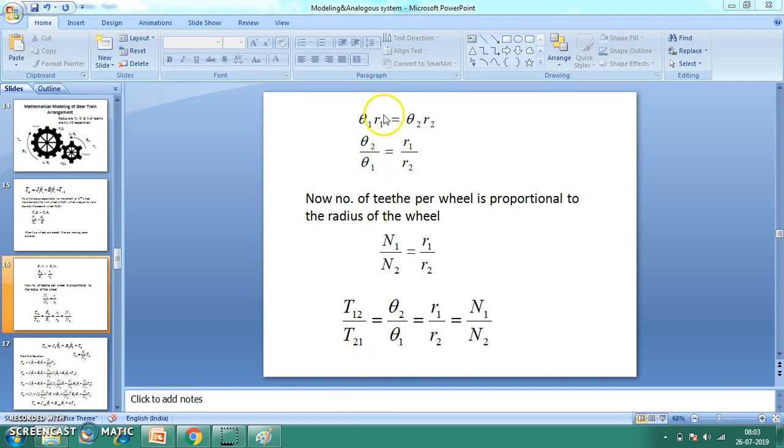We can calculate the amount of length they traverse in the interlocked condition: theta1*r1 for the first wheel and theta2*r2 for the second wheel. As they are interlocked and having the same path, theta1*r1 equals theta2*r2, so from that we can get this relation.